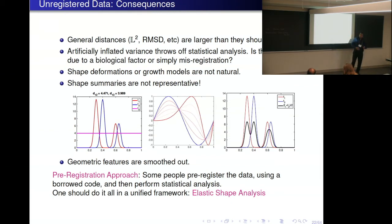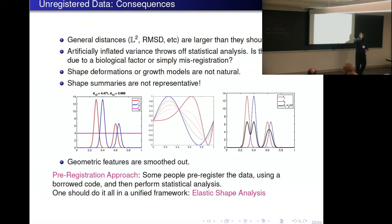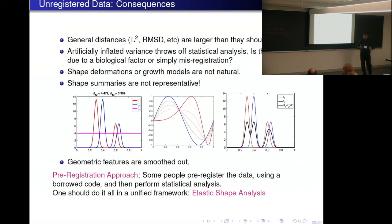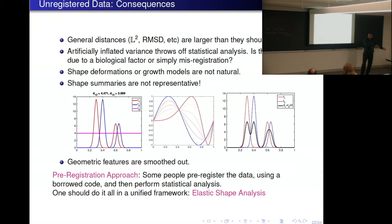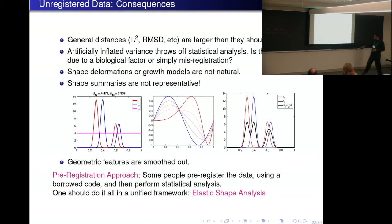People recognize that in shape analysis, registration is a big and very important problem. The way people handle it is to get hold of some software or technique from somebody else which does the registration — treating it as a pre-processing step. The problem is obvious: the technique and metric that went into registering the data has nothing to do with the model and metric used in analyzing the data. One should do it all together in a unified framework. This is what we call elastic shape analysis — where one tries to do it all together.